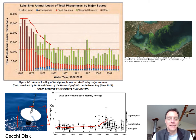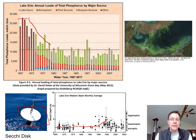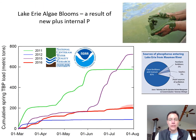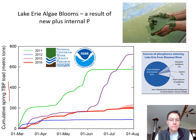The Secchi depth eventually started getting a little deeper — toward maybe five meters. That's not so much because of the Clean Water Act; it's largely because the zebra mussel was accidentally introduced into Lake Erie. It's a filter feeder that filtered out a lot of the algae and clarified the lake, though it caused other problems too. So Lake Erie has had something of a comeback — the phosphorus load is now below the maximum allowable level, and the water has gotten somewhat clearer.